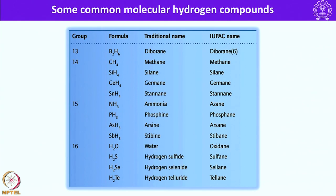Here are some common molecular hydrogen compounds and their traditional names: B2H6 is called diborane, CH4 is methane, SiH4 is silane, GeH4 is germane, SnH4 is stannane, NH3 is ammonia, PH3 is phosphine, AsH3 is arsine, SbH3 is stibine, H2O is water — though technically it should be called oxane — H2S is hydrogen sulfide, which could be called sulfane, and similarly selenane and tellurane. However, those names are not common and we use the traditional textbook names.